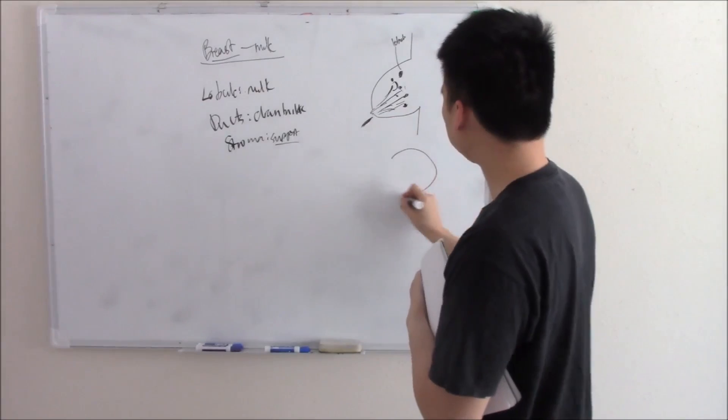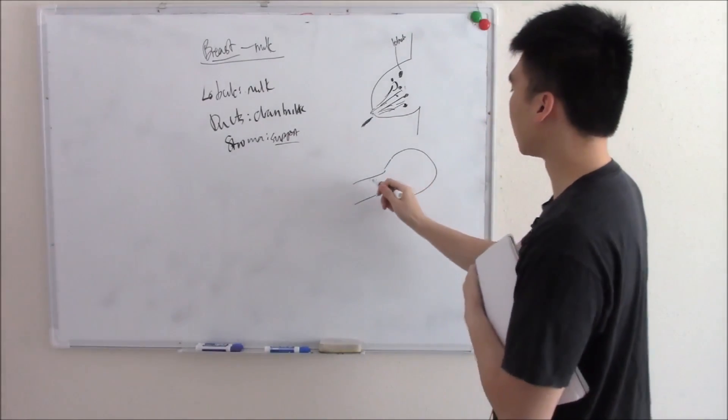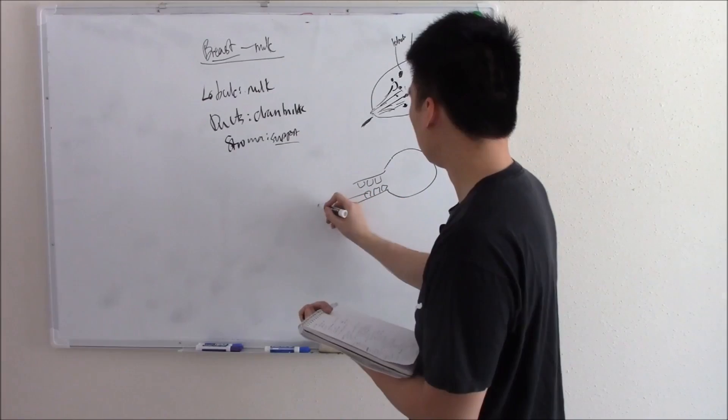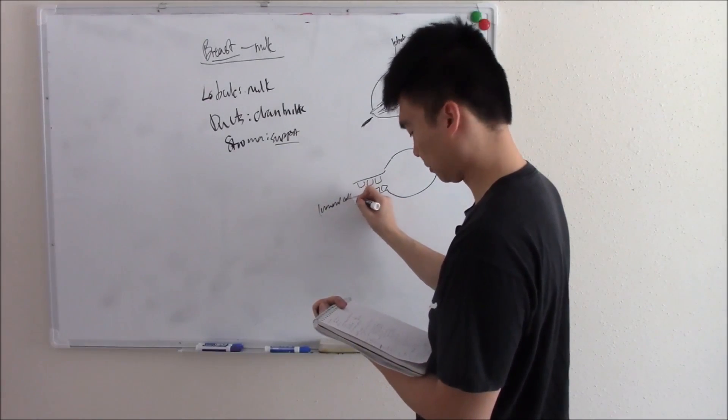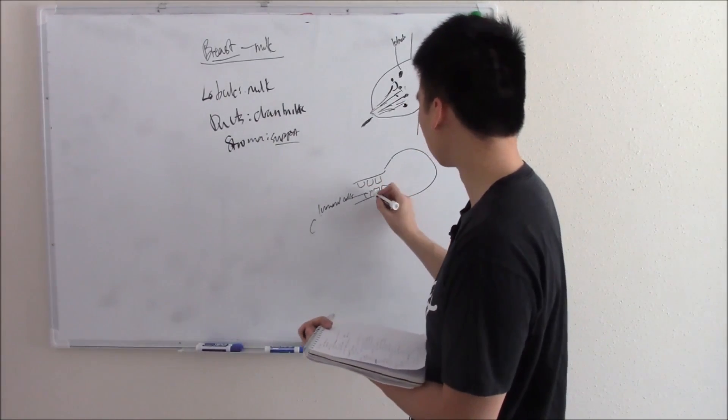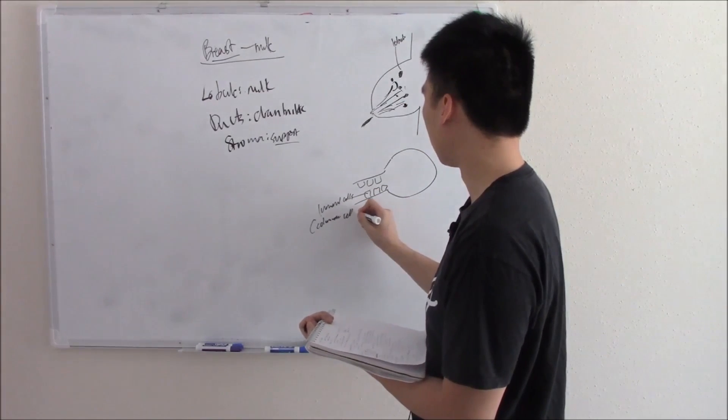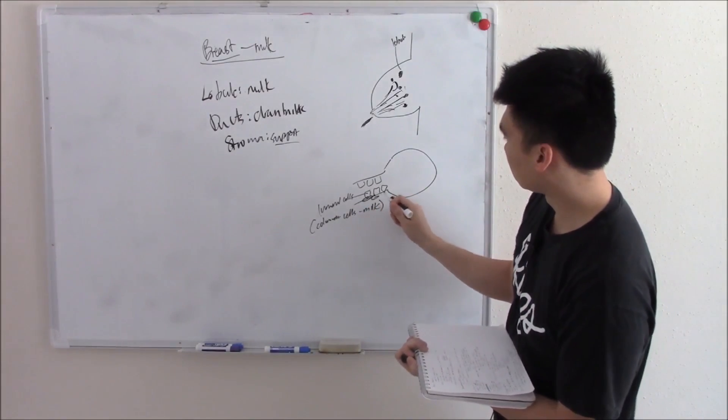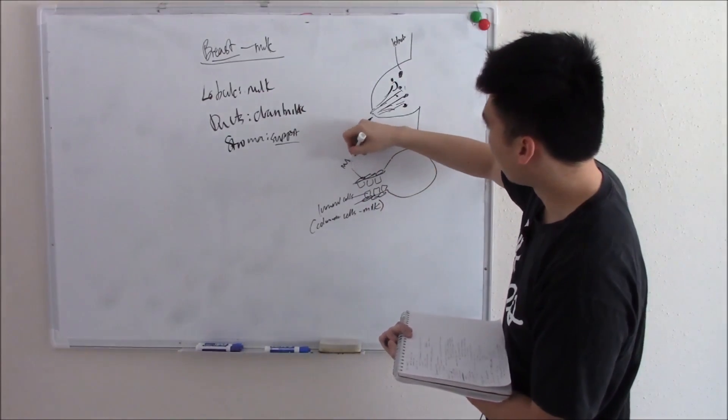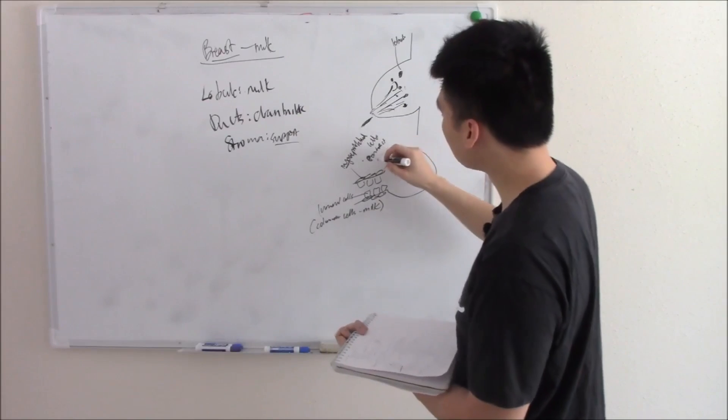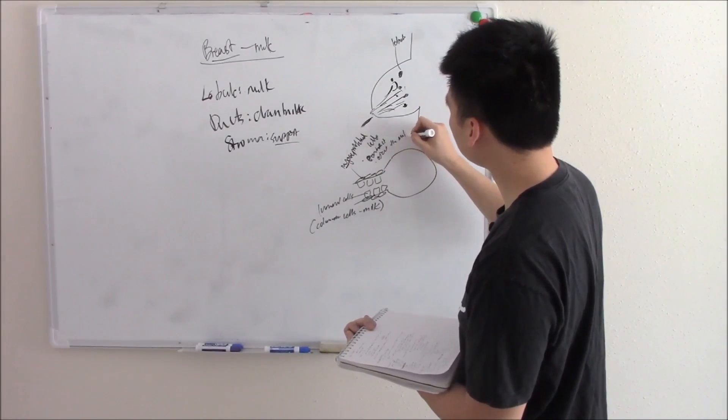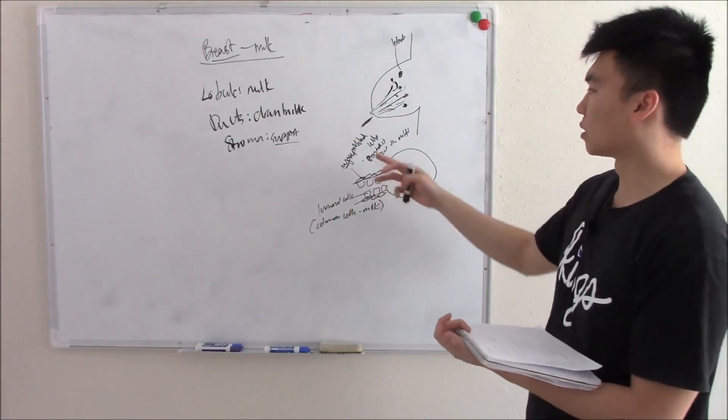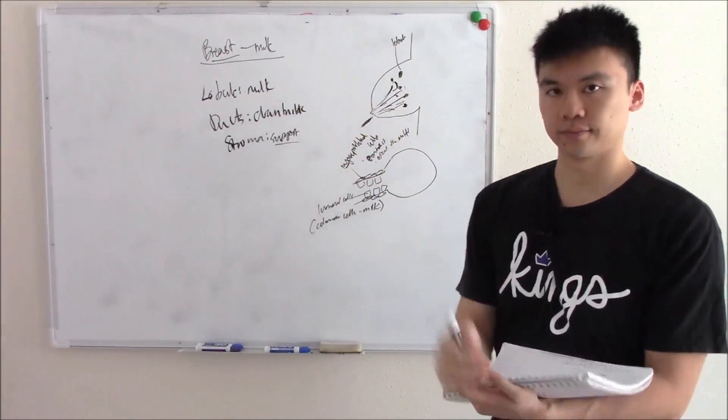If we take a closer look down to the cellular layer, we can see there are two main cell layers we need to know. The first is your luminal cells - these are columnar cells, and these are the things that actually make the milk. Then right beneath the luminal cells, you have myoepithelial cells, and the purpose of these cells is they eject the milk. That is the basis of the breast - luminal cells making the milk, myoepithelial cells ejecting it through the ducts, out the nipple.